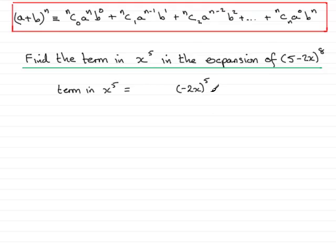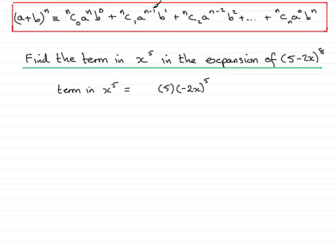What I need to do next is know what power the a part is raised to. The a part is the 5, so I'll put the 5 down here, because every term has an a part times a b part. When I look at the formula, notice how the sum of the powers on a and b in each term total n: n plus 0 is n, n minus 1 plus 1 is n, and so on. So the power above the 5 must be something that totals 8, which means it's got to be 3.